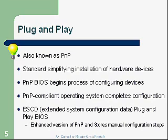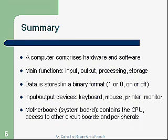In summary, the computer comprises hardware and software. We can't get that hardware to work without the software. Main functions are input, output, processing, and storage. Data is stored in a binary format — ones and zeros — a base two system, which is the only thing a computer understands. Input and output devices are keyboards, mice, printers, monitors, and other devices that plug into the back of the computer.